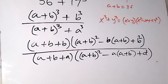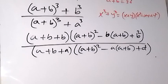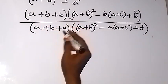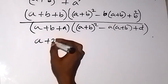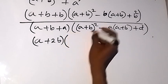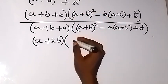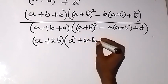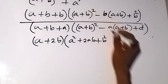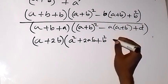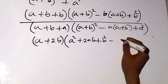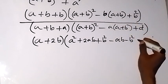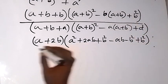When we simplify the numerator bracket, b plus b gives 2b, so we have (a plus 2b). Then we expand (a plus b) squared to get a squared plus 2ab plus b squared. Then minus b times a gives minus ab, then minus b squared, then plus b squared. So minus b squared and plus b squared cancel each other.